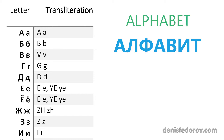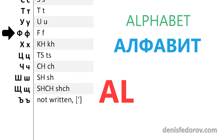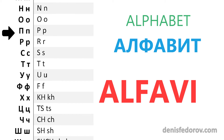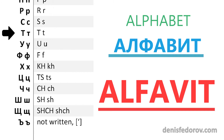Let's take the Russian word 'alphabet' and transliterate it. Letter A is A. Letter L is L. Letter F is F. Letter A is A. Letter V is V. Letter E is I. Letter T is T. So we get the word 'alphabet'. That's how it is done — easy and simple.